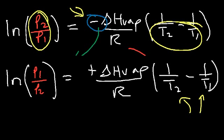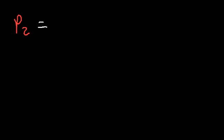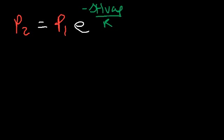Both of these equations can give you the same answer. If you need to find the vapor pressure at a new temperature, use this form: P2 equals P1 times E raised to the negative delta H of vaporization divided by R, times 1 over T2 minus 1 over T1.